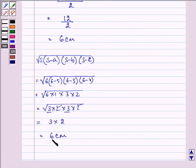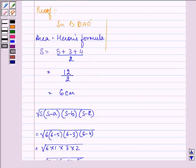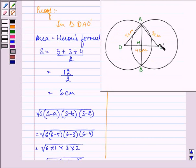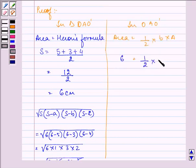Now the area is found out to be 6 centimeter square. Also we know that we can find out the area of triangle OAO' using the formula, that is half into base into altitude. Now we found out that the area of this triangle is 6. So 6 is equal to half into base of this triangle, which is 4 centimeters, into altitude.